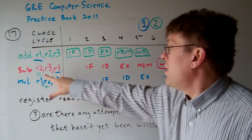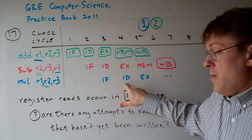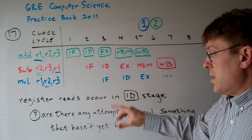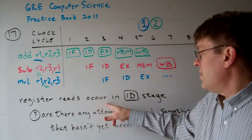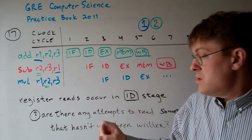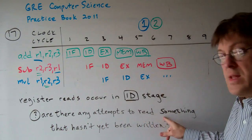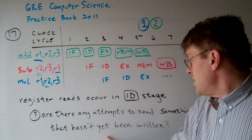But this is the write back for the subtract, where R2 would be written, and this is where the read would be done for the multiplication operation. The key thing to remember is if register reads occur in the ID stage, it's going to read the registers in the ID stage. You have to ask yourself, are there any attempts to read something that hasn't yet been written?